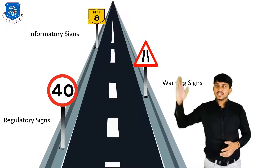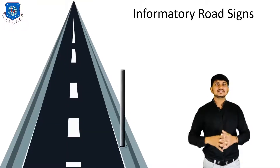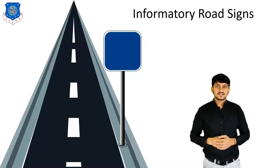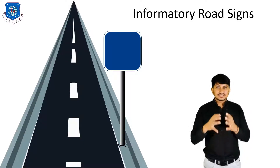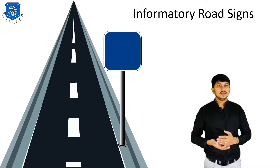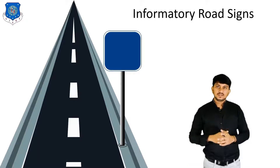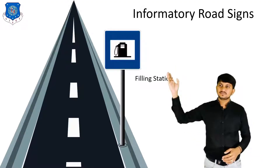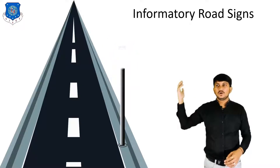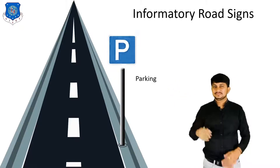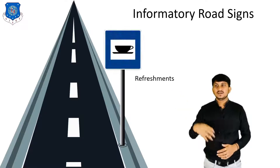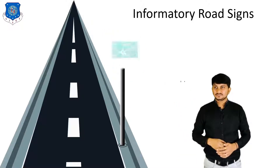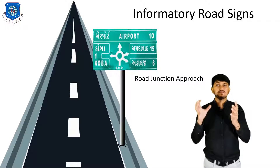The last type of traffic sign is Informatory Signs. These signs are meant to provide information on direction, destination, roadside facilities, etc. to the road user. This road sign helps a driver in saving time reaching their destination without looking around. These signs are normally blue in color. Different types of Informatory Signs are like Filling Stations, Restaurants, Hotels, Parking, First Aid, Medical Facilities, Refreshments, Hospitals, Bus Stop, Route Marker Signs, and Road Junction Approach.